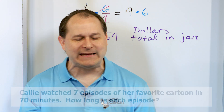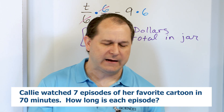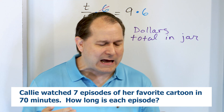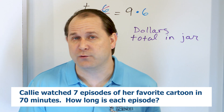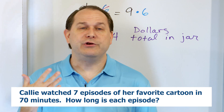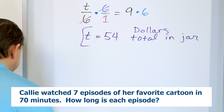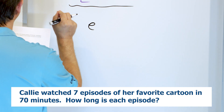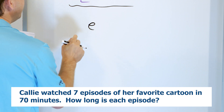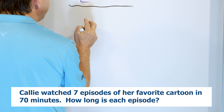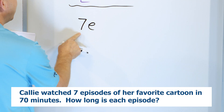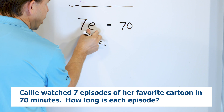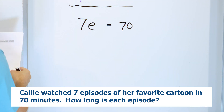Last problem: Callie watched seven episodes of her favorite cartoon in 70 minutes. How long is each episode? Write an equation and use it to solve the problem. Zero in on the question: how long is each episode? They want the time in minutes. I'm going to use E for episode — E represents the length of an episode. It says she watches seven of these, so if this is the length of one episode, multiply it by seven, and the total length is 70 minutes. So 7E = 70.